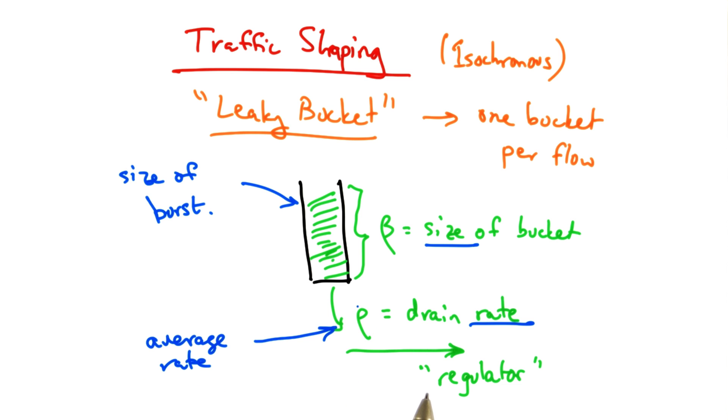The size of the bucket controls the maximum burst size that a sender can send for a particular flow. So even though the average rate cannot exceed rho, at times the sender might be able to send at a faster rate as long as the total size of the burst does not exceed the size of the bucket or overflow the bucket.